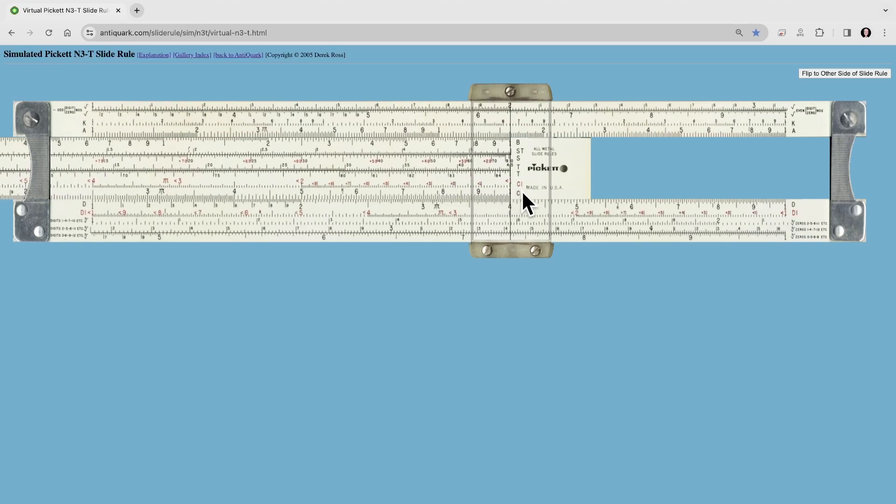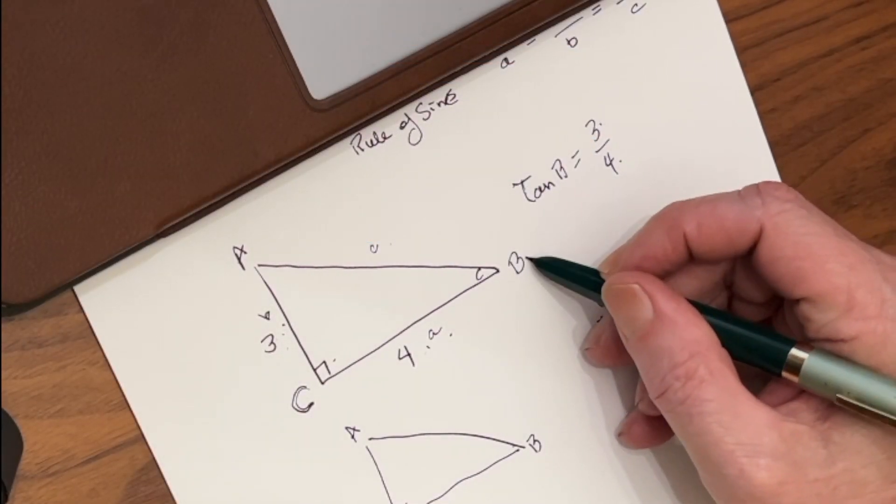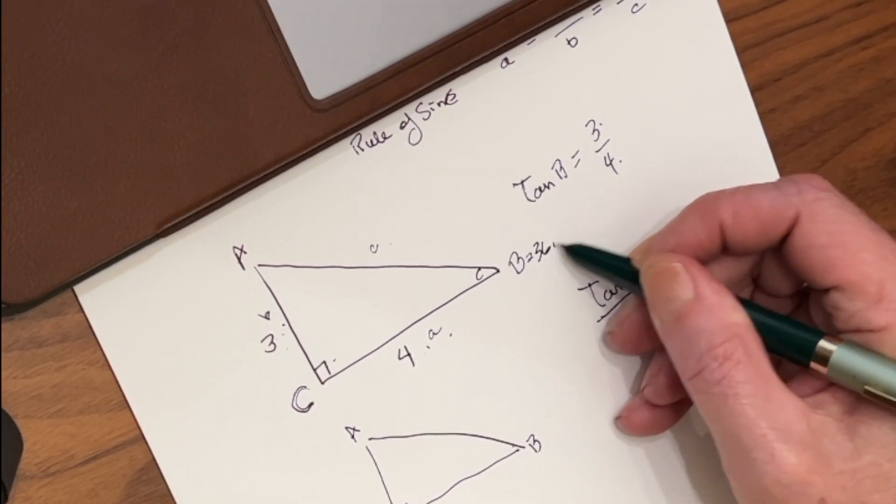Now, if we come here to 3 and look straight up on the tangent scale, we're going to go ahead and get our tangent. And as you can see, this is 35, 36, that's 37, but we're at 36.9. Now we know that angle B equals 36.9.